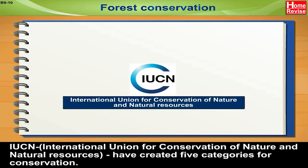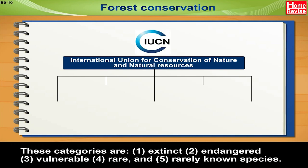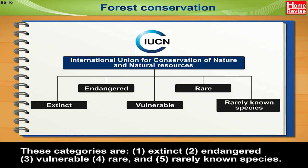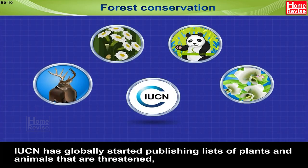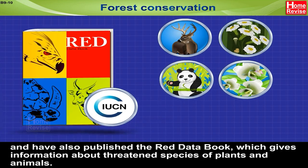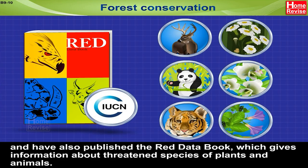The IUCN — the International Union for Conservation of Nature and Natural Resources — has created five categories for conservation: Extinct, Endangered, Vulnerable, Rare, and Rarely Known species. IUCN has globally started publishing lists of threatened plants and animals and has also published the Red Data Book, which gives information about threatened species of plants and animals.